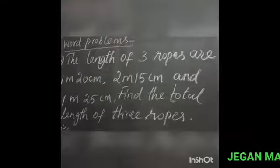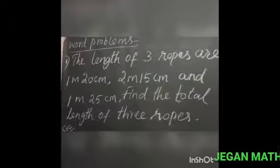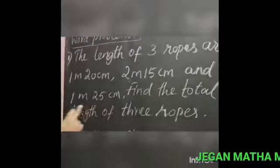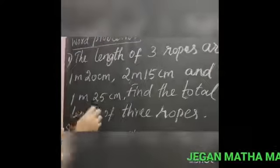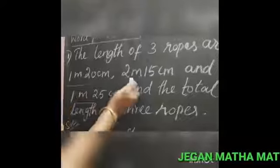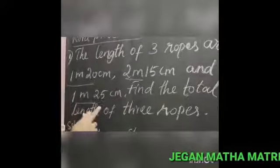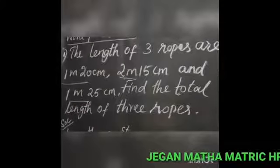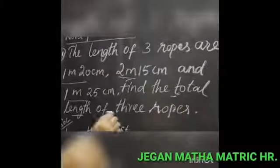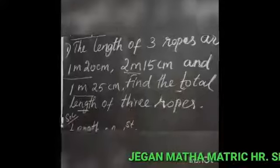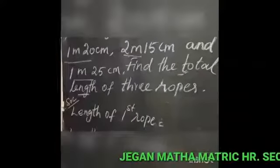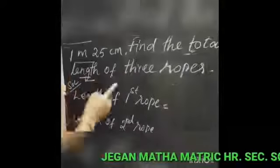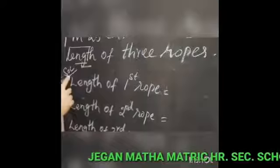First, the lengths of 3 ropes are 1 meter 20 cm, 2 meter 15 cm, and 1 meter 25 cm. The 3 measurements are given — these are the lengths of the 3 ropes. You have to find the total length. This is a word problem, so you must write the steps one by one as a solution.